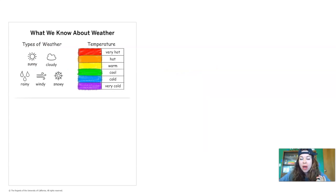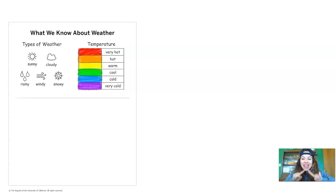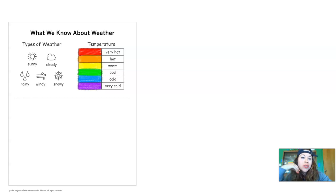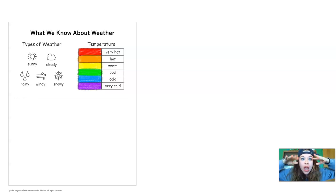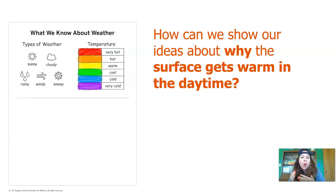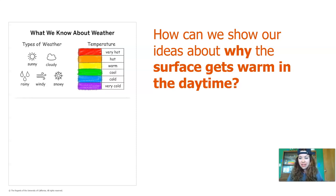Let's think back about what we know about weather. In earlier lessons, we learned about the different types of weather: sunny weather, cloudy weather, rainy weather, windy weather, and snowy weather. We also learned about temperature — it can be very hot, hot, warm, cool, cold, or very cold. Now we want to add to our ideas about why the surface gets warm during the daytime — how sunlight causes surfaces to warm up.